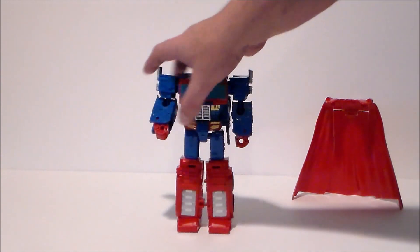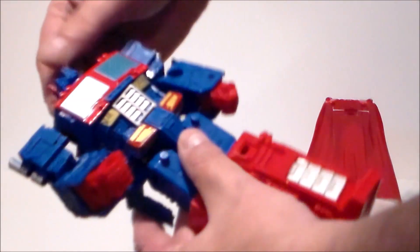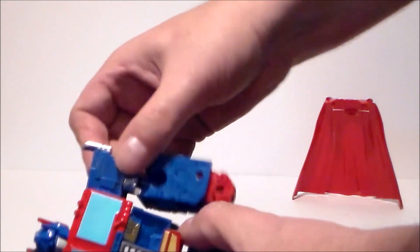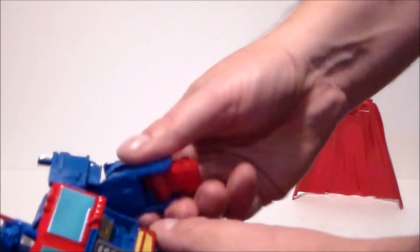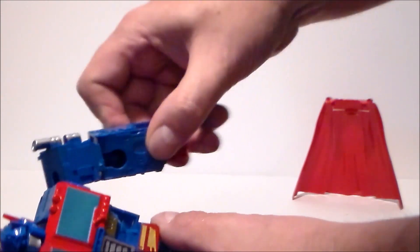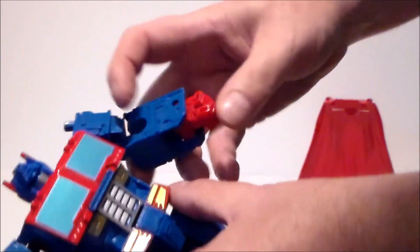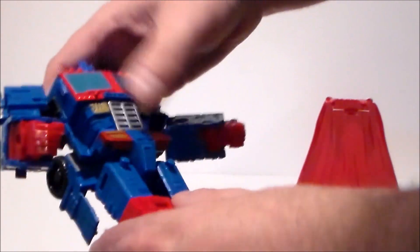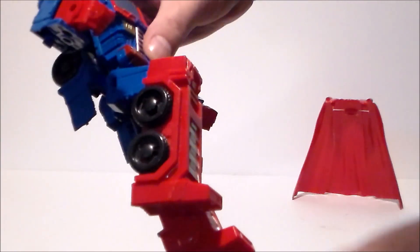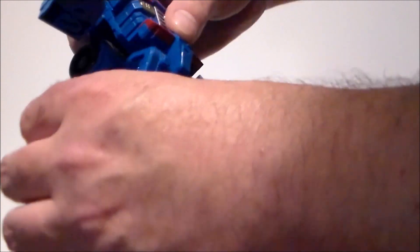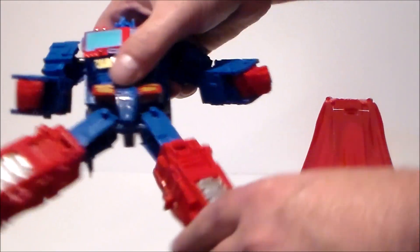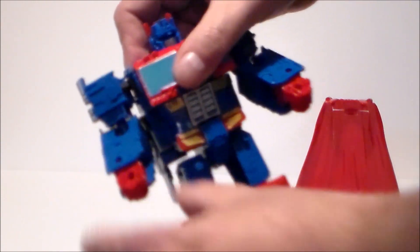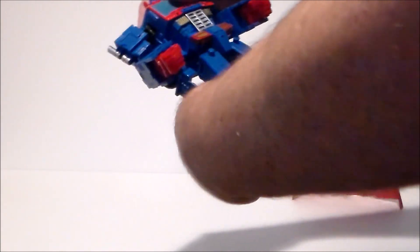Now the figure itself, as far as articulation goes, the head moves back and forth, nothing big there. Arms move up and down, they move around. There's a ball joint at the elbow so it moves around quite a bit, and the wrists move in and out, but that's really for transformation. Legs move that far out, he's got a knee bend right there, they go back that far, they do splay out, and there is no foot articulation unfortunately. The wrists do bend, but again that's for transformation.